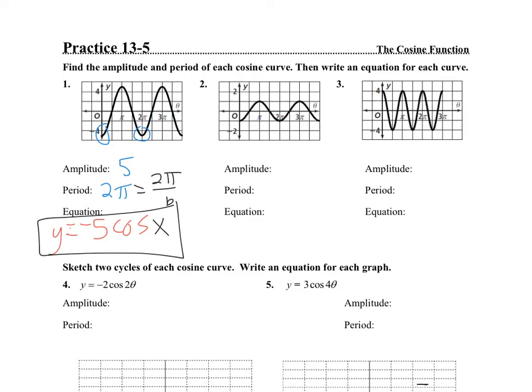Here my amplitude is 1. The period is again 2π, so I know B equals 1. This is also a negative cosine function because it's starting down. So it's y equals negative 1 cosine, and my B is 1 because 2π divided by 1 is 2π. So it's cosine x.